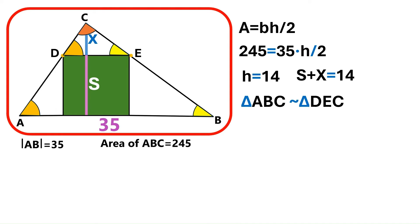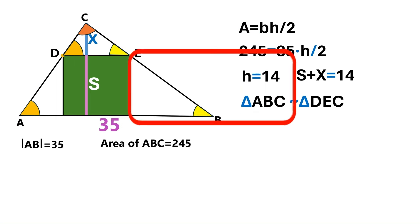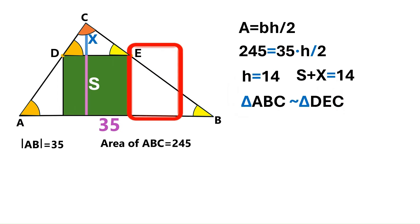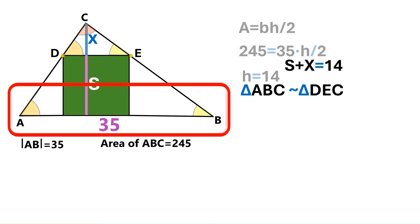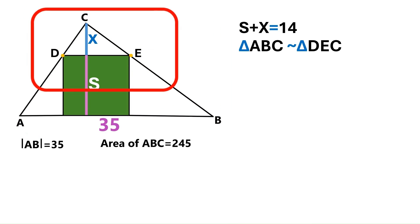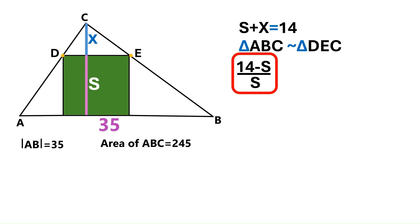Now that we know ABC and CDE are similar triangles, we can conclude that the ratio of their heights to their bases must be the same. Let's set up an equation to show that. The height of the triangle CDE is X. But we know that S plus X is 14, so instead of X, let's write 14 minus S here. We divide that by S, because that's the side of the green square and it coincides with the base of the small triangle.